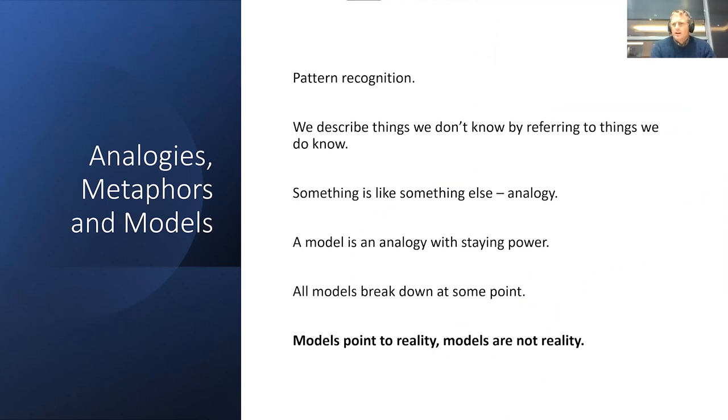Animals can recognize patterns, but we can also recognize patterns and combining that with symbolic thought, a lot of things become possible. We describe things we don't know by referring to things we know well. That would also explain why different cultures have different conceptual frameworks, because they all start with different experiences and different things that they know well, which they then use to explain new things. This is what one calls an analogy - something is like something else. A model is an analogy with staying power. As soon as everyone starts to use the same analogy, we refer to it as a model. All models break down at some point. Models point to reality, but models are not reality.